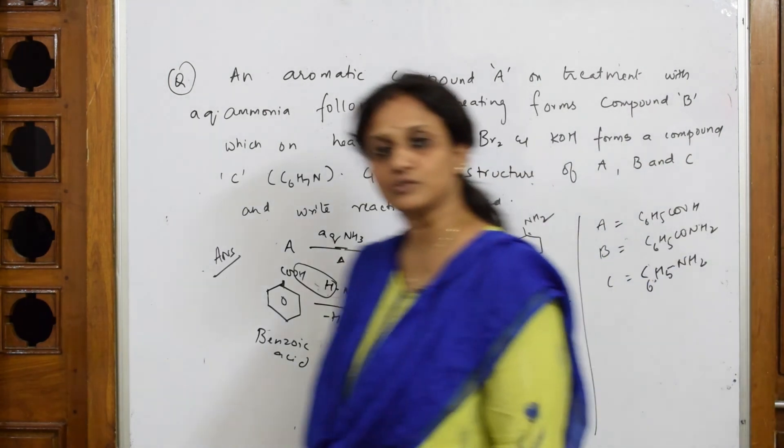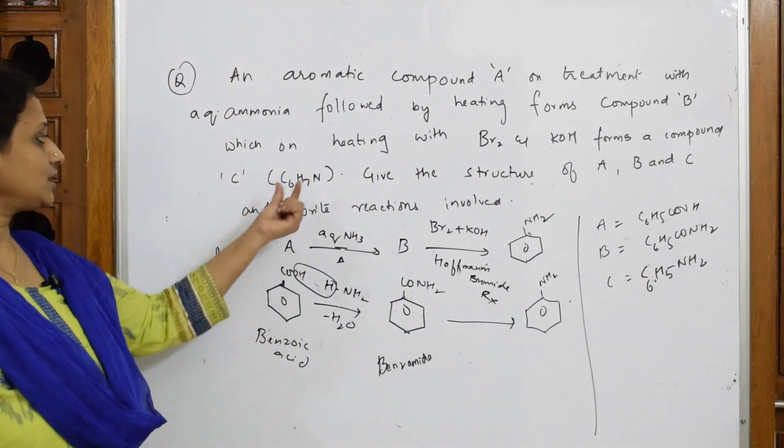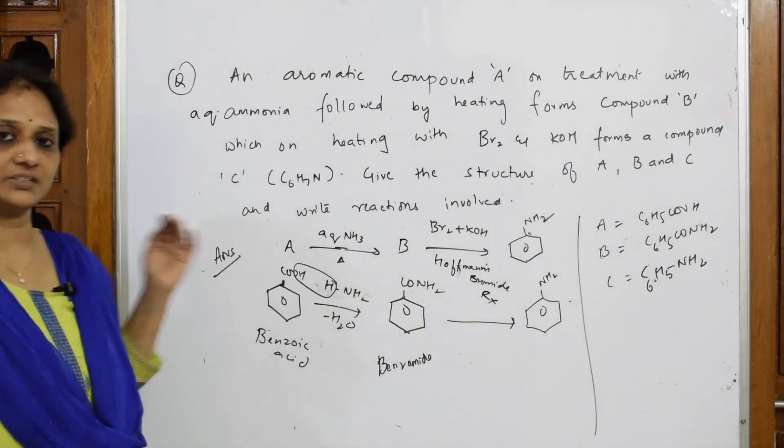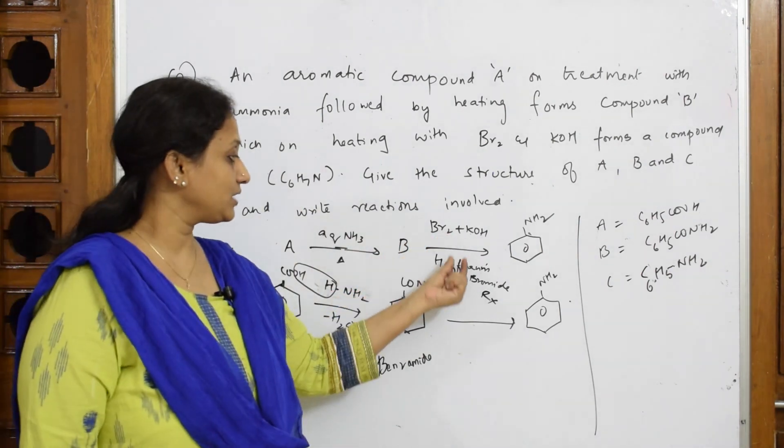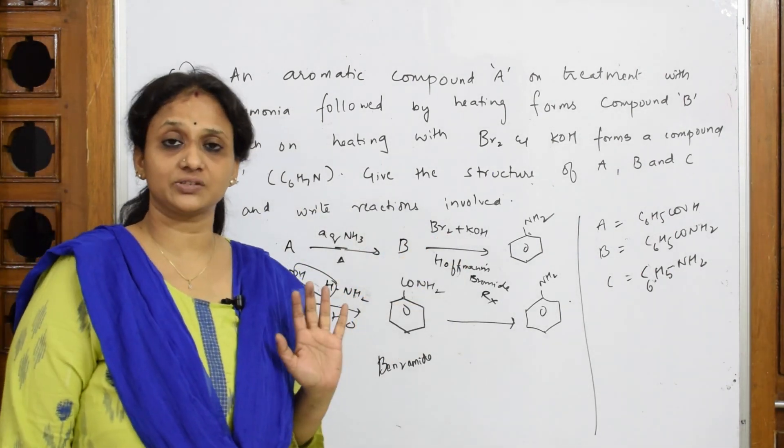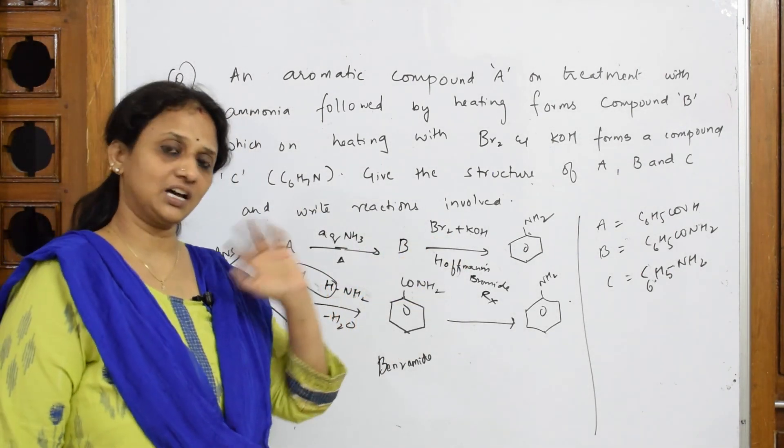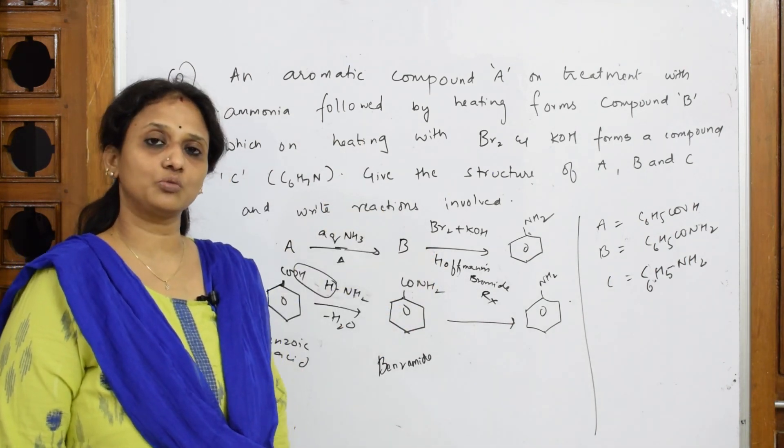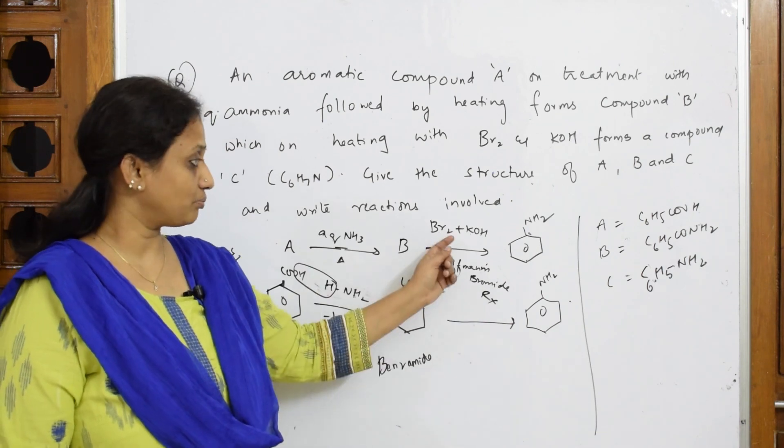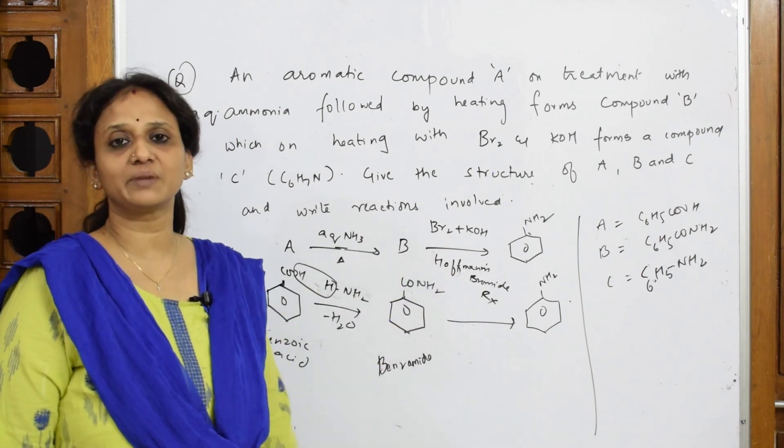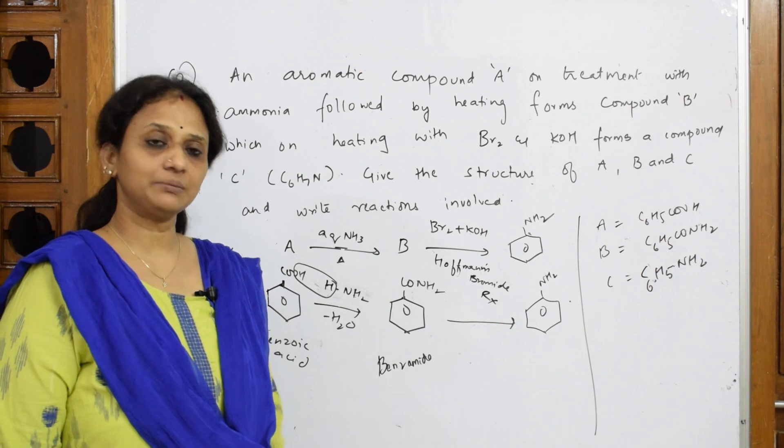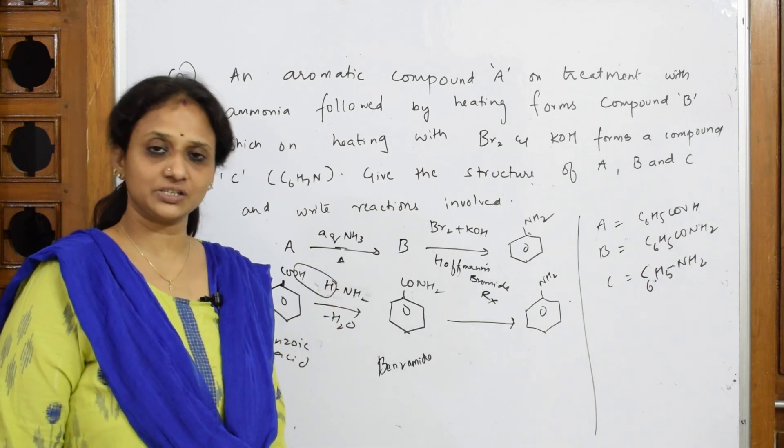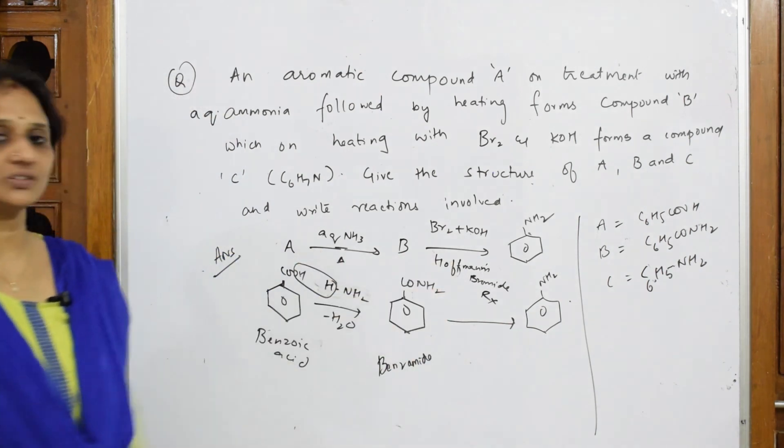This is how you're going to solve the reaction. Important thing: one clue will be given to you, from there you can derive. You will be given the reagents, you should be clear with the reagents. Chloroform means carbylamine, NaNO2 HCl for converting into chlorobromobenzene Sandmeyer's, Br2 and KOH is Hoffmann's bromamide, for Gabriel phthalimide you use alcoholic KOH with phthalimide. This is your reaction.